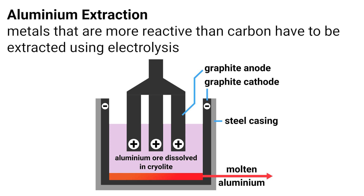So to reduce costs, powdered aluminium oxide is dissolved in something called molten cryolite. This melts at a much lower temperature than aluminium oxide, and helps to reduce costs. We use carbon electrodes when we extract aluminium, and so they have to be replaced regularly, as they react with the oxygen gas produced.